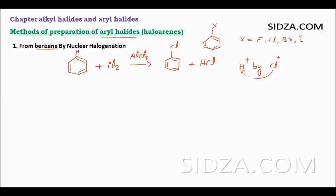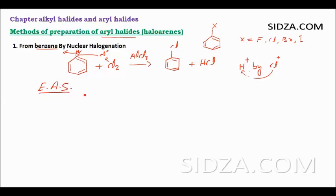The electrophile Cl+ replaces and substitutes the hydrogen from the ring. That is why we call this reaction an electrophilic aromatic substitution reaction — an EAS reaction.